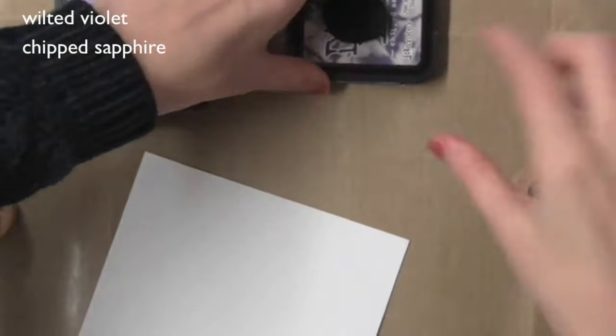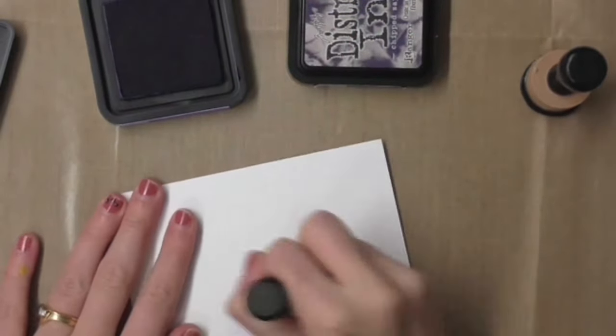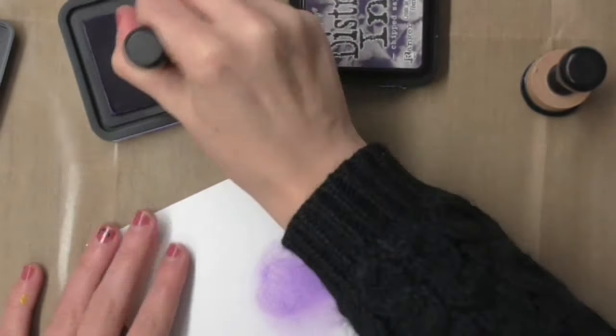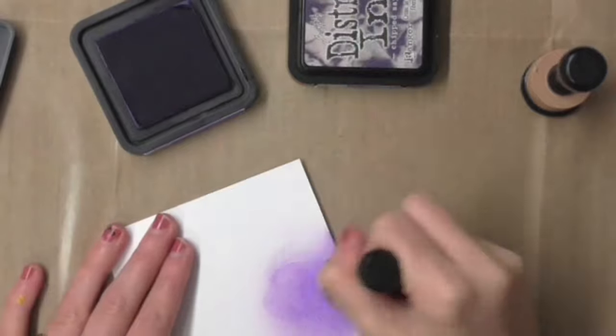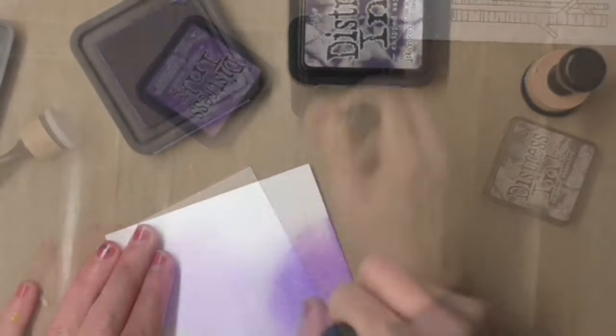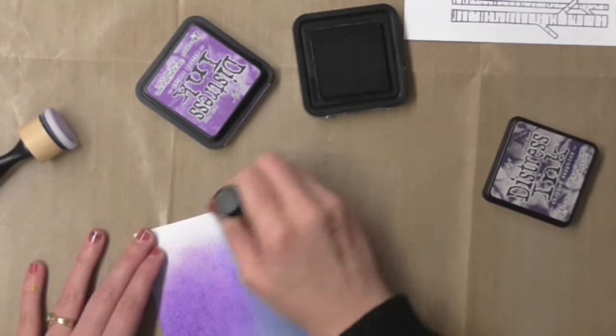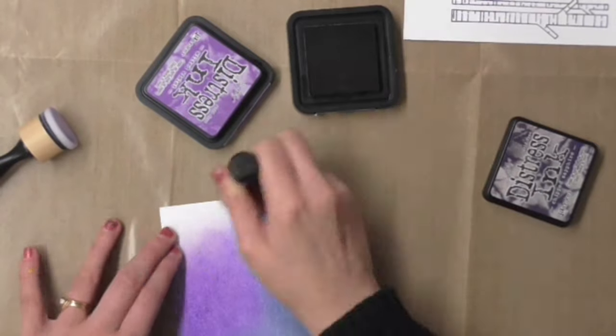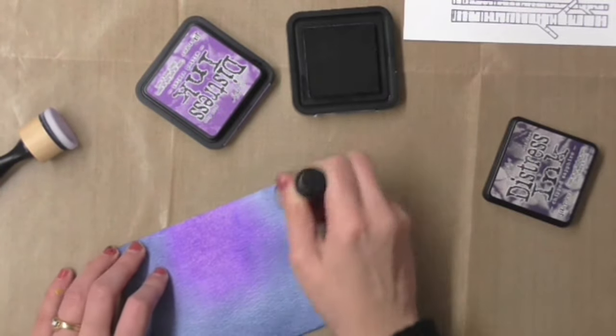For the background of my shaker card I'm going to be using some Distress Inks to create a purpley blue background. The LED that I'm using today is a blue color so I wanted to bring in some wintry blues and purple tones.